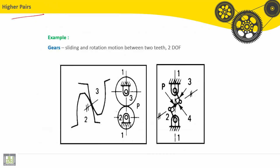One example for the higher pairs, the gears. Sliding and rotation motion between two teeth. The total is two degrees of freedom.